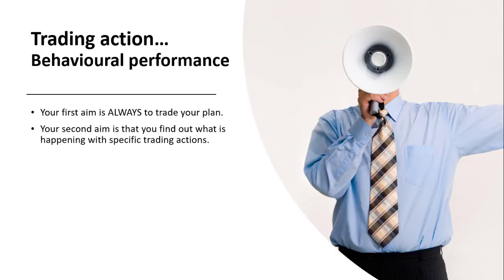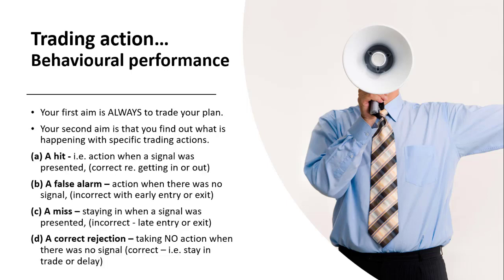Our first aim is always to trade your plan, and your second aim is to find out what is happening with specific trading actions. There are four potential scenarios. The first is a hit — taking action when a signal was presented — either correctly getting in or correctly getting out.